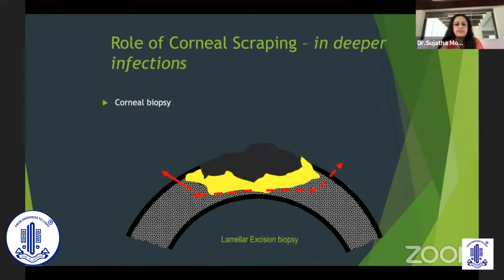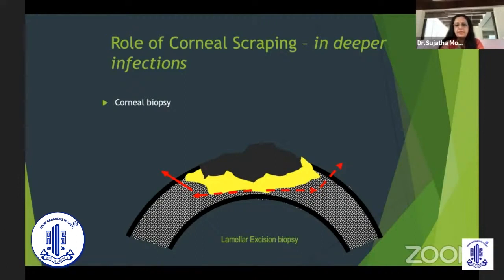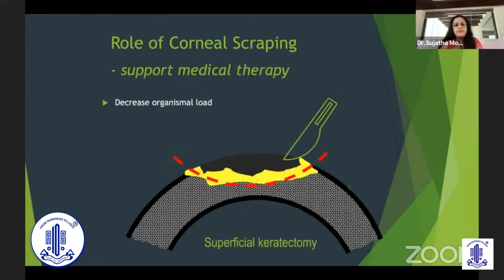In patients with very deep and quite large ulcers, you can do a DALK — something like a near-total DALK — which is a manual DALK. This can debulk the infection and allow treatment. It also gives better microbiological diagnosis because we have more specimen for more stains, smears, and cultures. We can deal with recurrence of infection after the manual DALK. The role of corneal scraping is not only for diagnosis but also to support medical therapy by reducing organism load, and superficial keratectomy exposes the organism to direct antimicrobials.